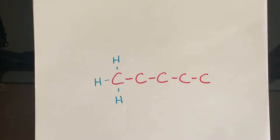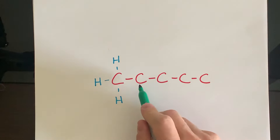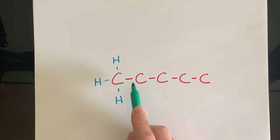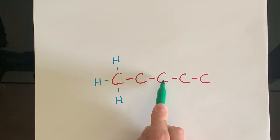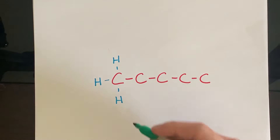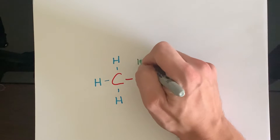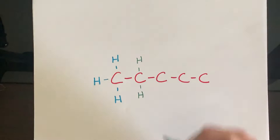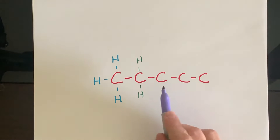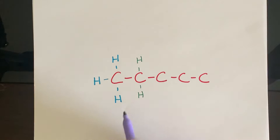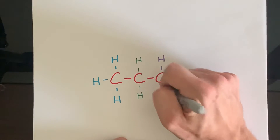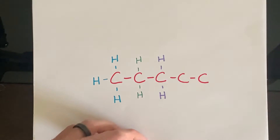If we go to carbon number two, it has one bond to carbon number one and then one bond to carbon number three. So it already has two bonds, so we're going to have to put in one, two hydrogens. And that's all we need for that one. Carbon number three again looks exactly like carbon number two — it's attached to carbon number two and carbon number four, so we're going to put in one, two hydrogens on there.